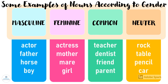Some examples of nouns according to gender. Masculine: Actor, Father, Horse, and Boy. Feminine: Actress, Mother, Mayor, and Girl. Common: Teacher, Dentist, Friend, and Parent. Neuter: Rock, Table, Pencil, and Scarf.